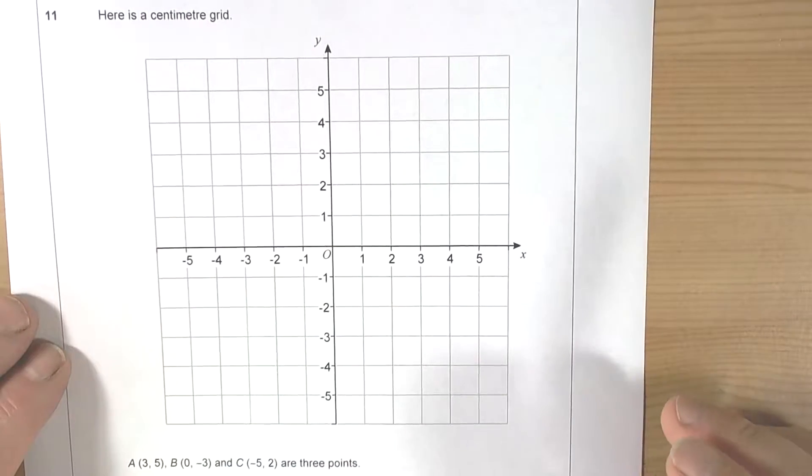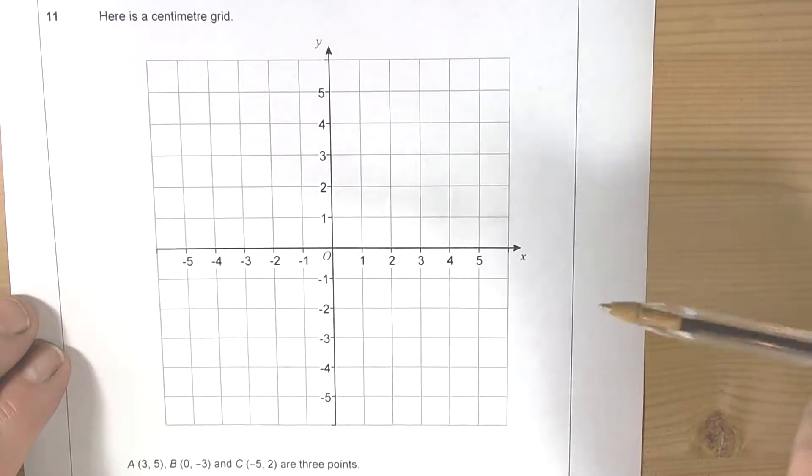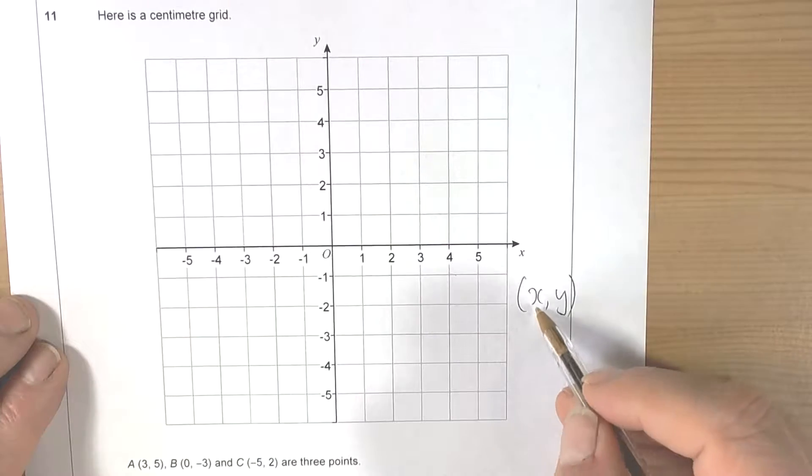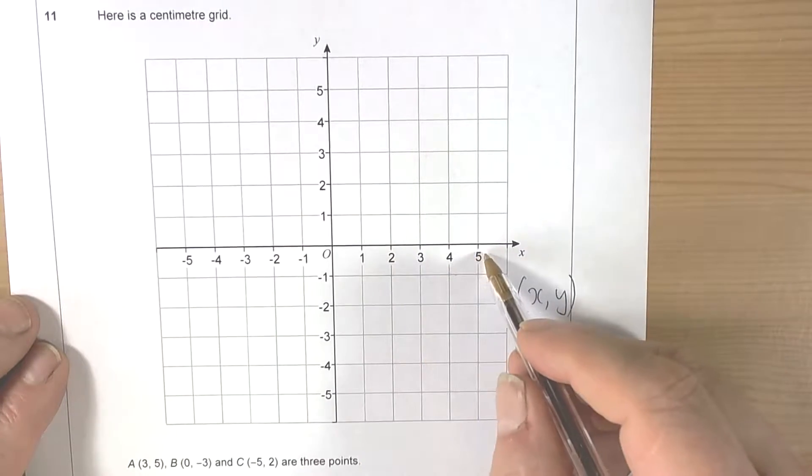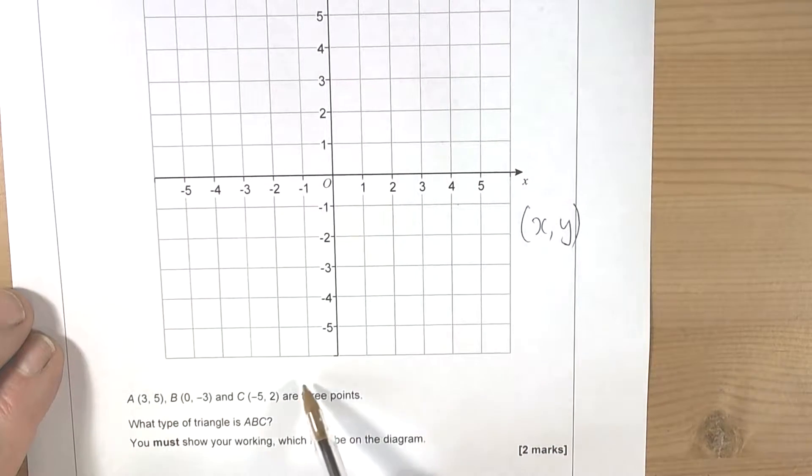This question asks us to work with a coordinate grid. Remember that coordinates always go in the direction of X first, across the axis, and then up and down. We need to plot these three points because the question asks what type of triangle is ABC.